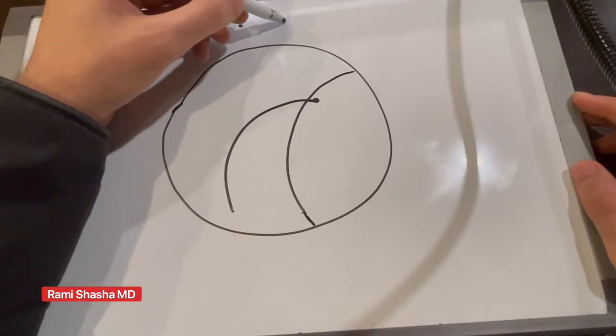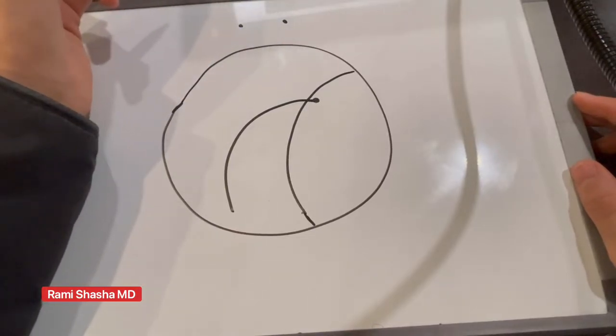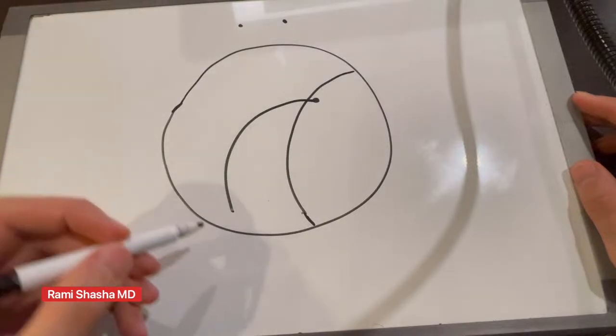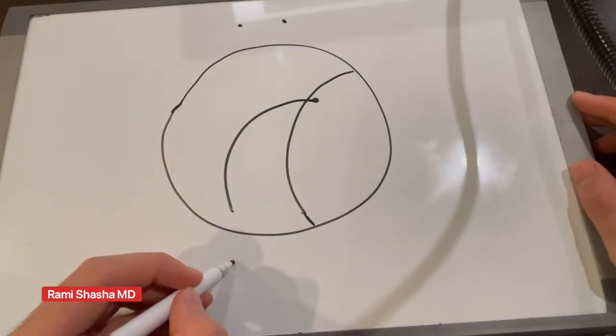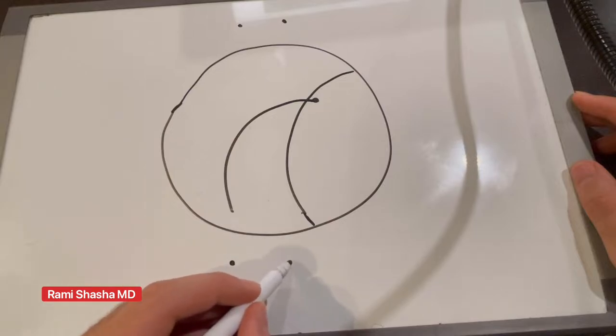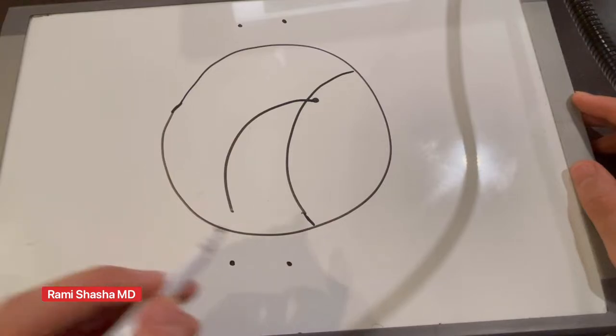About three to four millimeters across, and then we do the same thing on the other side. So two millimeters and about three to four millimeters across.